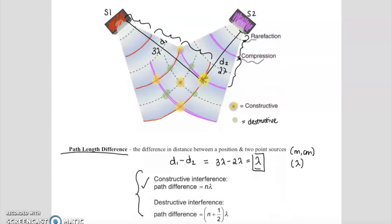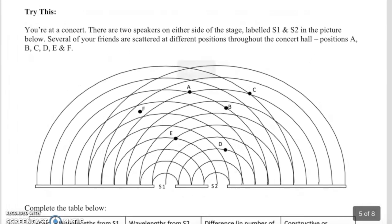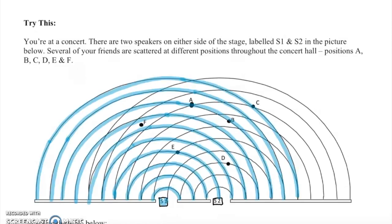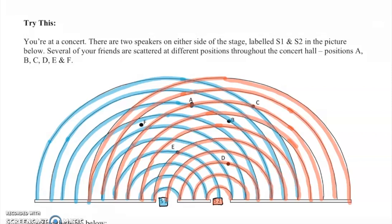Let's look at a slightly more complex example. Let's say you are at a concert with two speakers on either side of the stage, labeled S1 and S2 — these are your sources of sound waves. Several friends are scattered at positions A, B, C, D, E, and F. I'm going to color code the waves: all waves from S1 are blue, and all wave fronts from S2 are red. This technique really helps keep the waves straight, though on an IB exam you won't have colored pencils.